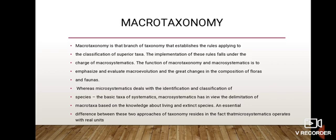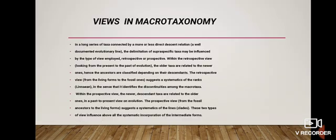Macro taxonomy integrates changes in the composition of the floras and faunas using a long series of taxa connected via more or less direct descent relations. Retrospective means looking from the present to the past of evolution, while prospective means looking from the living forms to the fossil ones.